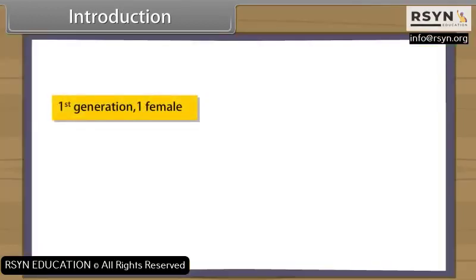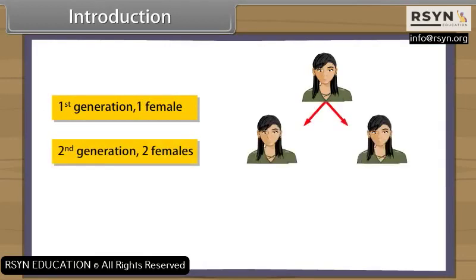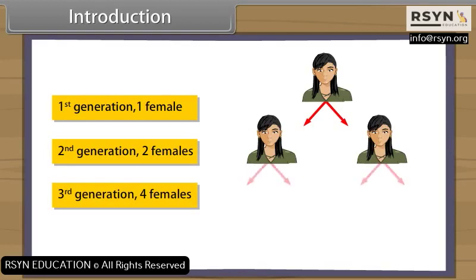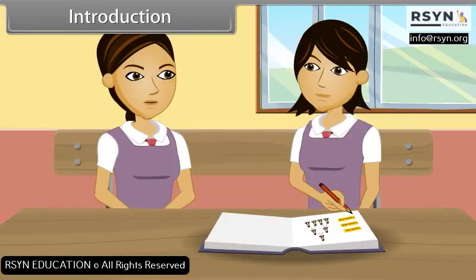First generation: one female. Second generation: two females. Third generation: four females. Wow, that was so simple. Do you know what we call such progressions? Such a progression is a geometric progression. Come, I will tell you more about this.